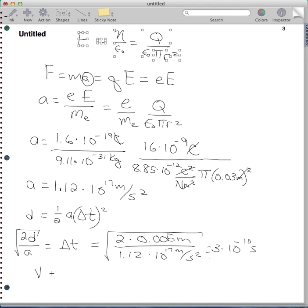And now I want to calculate velocity, and velocity is equal to a delta t. And that's gonna equal, I plug in my numbers, 1.12 times 10 to the 17th meters per second squared. Times 3 times 10 to the negative 10th seconds.